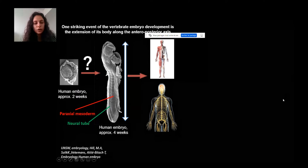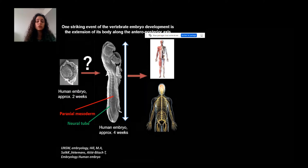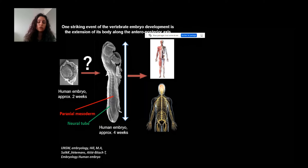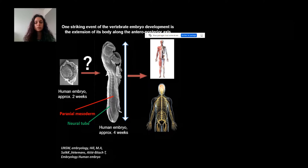Let me start by telling you about the human embryo. One striking event we see during development is that at two weeks it's just a flat disc, and two weeks later the embryo has actually elongated — it has a head and a tail. This elongation is coupled with the formation of several tissues, particularly the paraxial mesoderm, which will be responsible for future muscles, and the neural tube, which will be responsible for the future nervous system.